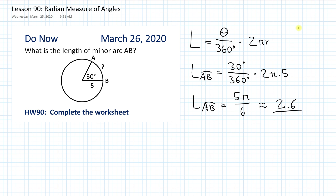So what does this number tell us? That means if the radius of the circle is 5 inches, then the distance from A to B — imagine you're walking from A all the way to B — you're walking 2.6 inches. It gives us the length as if you take arc AB and stretch it out, make it straight, and measure it against a ruler.